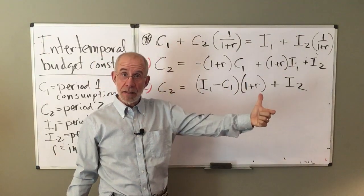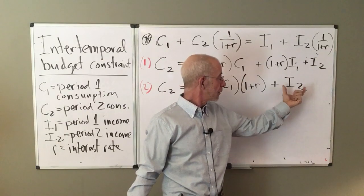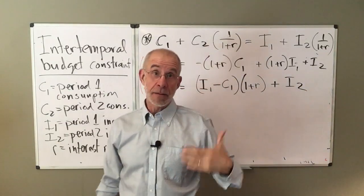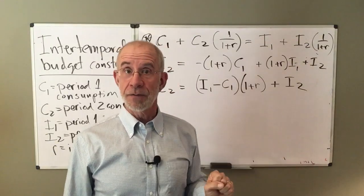So what we have here is period one's income minus the consumption in good one. That's basically savings. What I can consume in period two, actually let me start with the right hand side or the furthest over here.